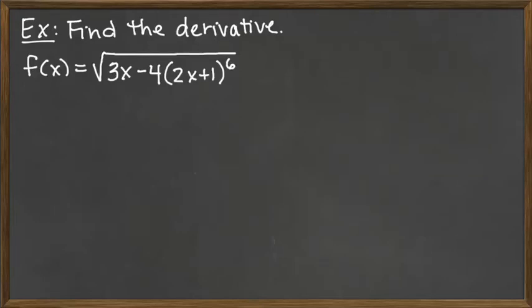To complete the derivative of the square root of 3X minus 4 times parentheses 2X plus 1 raised to the 6th power, the first step would be to rewrite using algebra so that I don't have the square root sign anymore. I would rewrite this as in parentheses 3X minus 4 times 2X plus 1 raised to the 6th power, and that would be raised to the 1 half power because that all used to be underneath the square root.